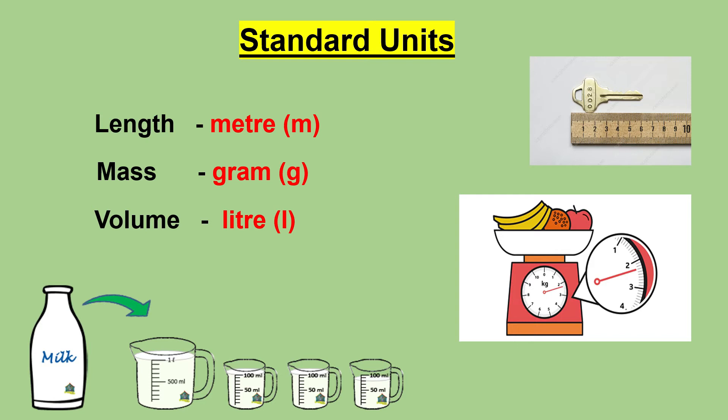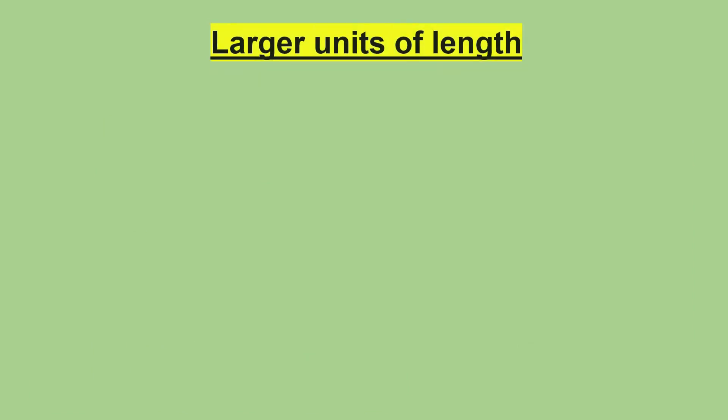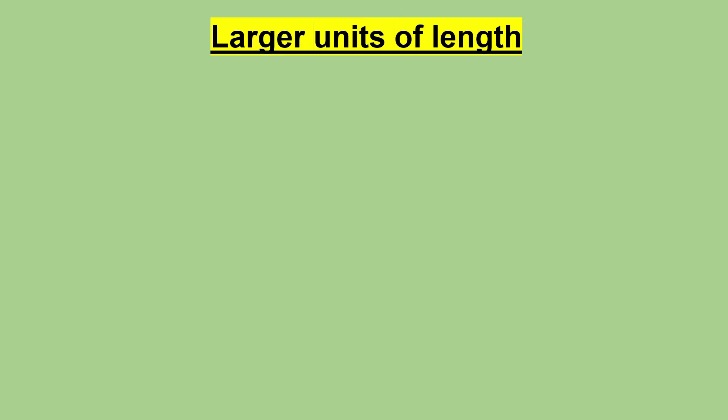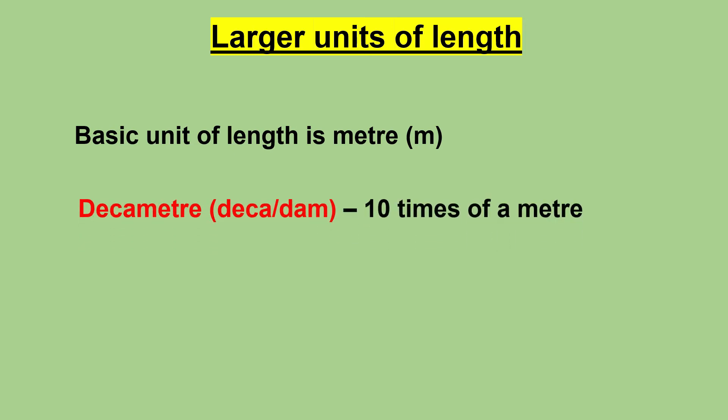The unit 10 times bigger than a meter is called decameter, abbreviation dam. The unit 100 times bigger than a meter is called hectometer or hm, and the unit 1000 times bigger than a meter is called kilometer or km.